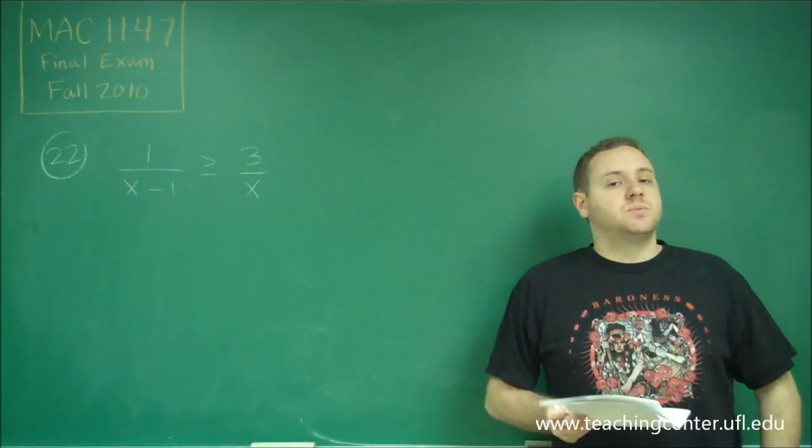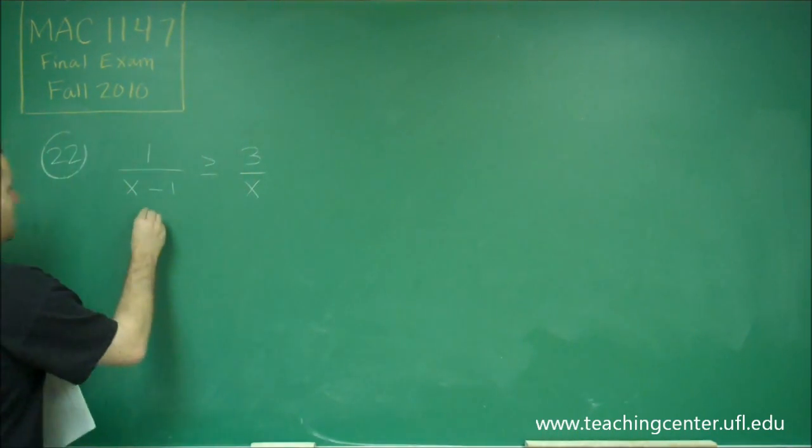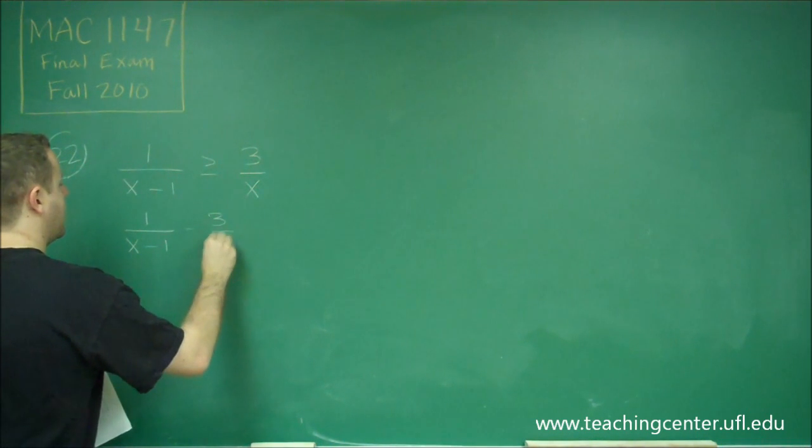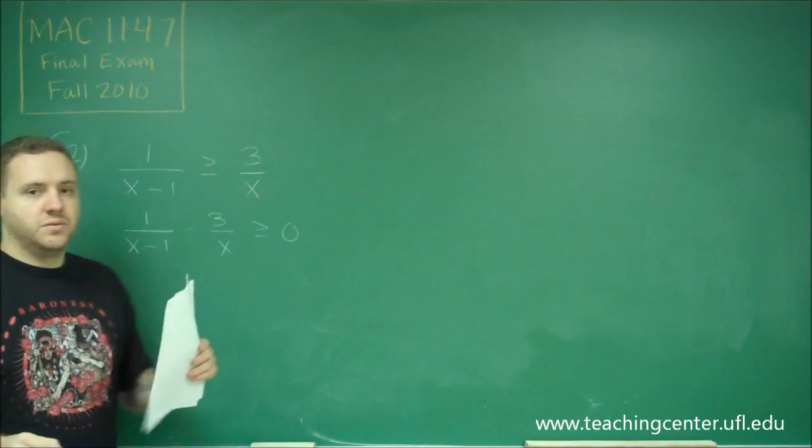Instead, what we have to do is subtract one of these over and get a common denominator. So we would have 1 over x minus 1 minus 3 over x is greater than or equal to 0 by just subtracting 3 over x over.